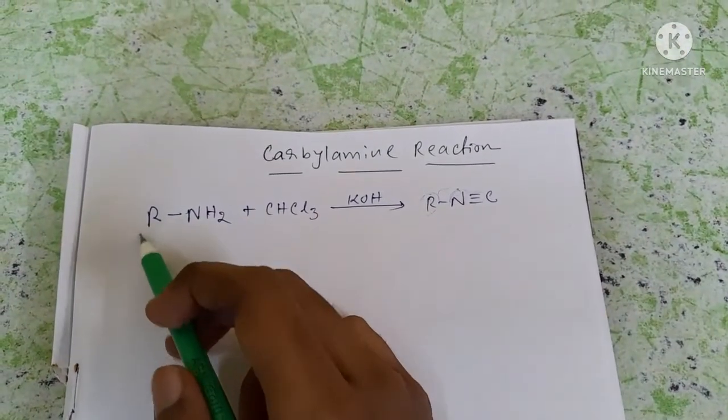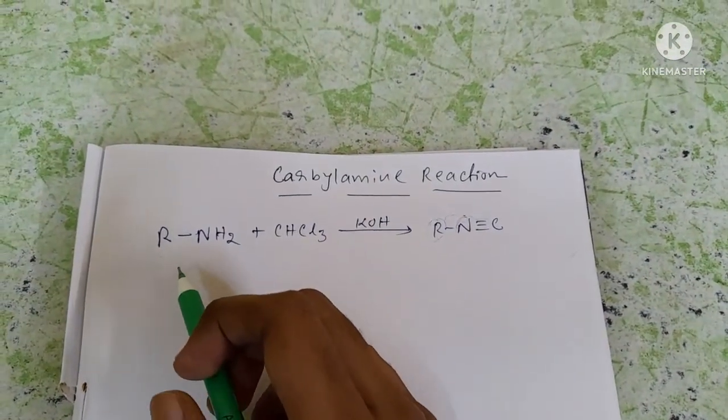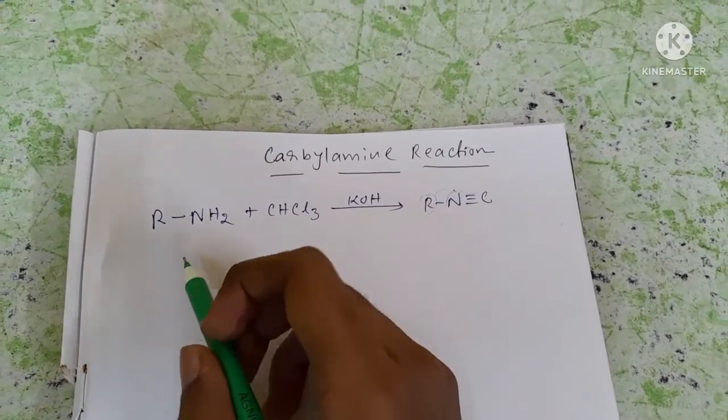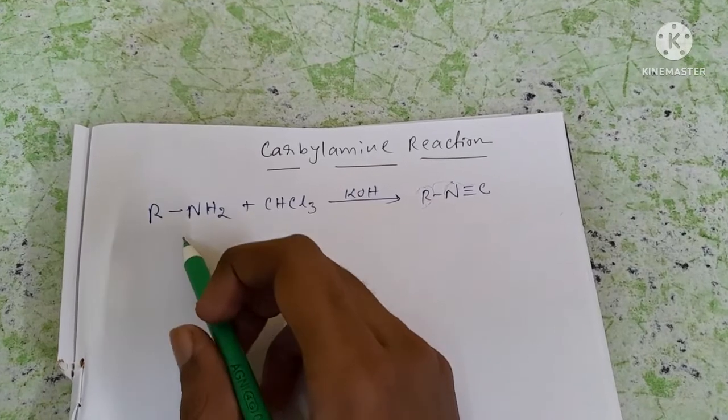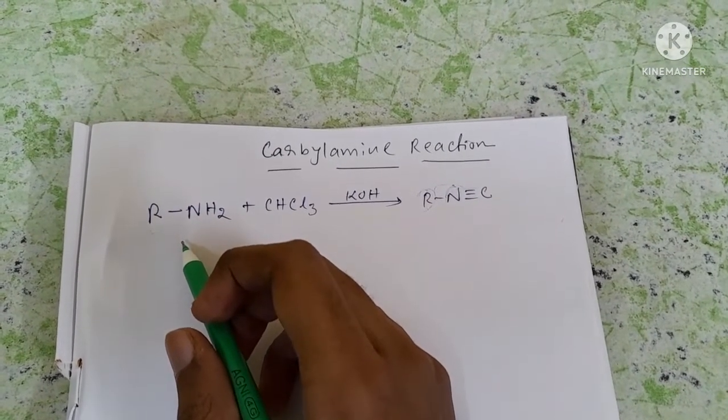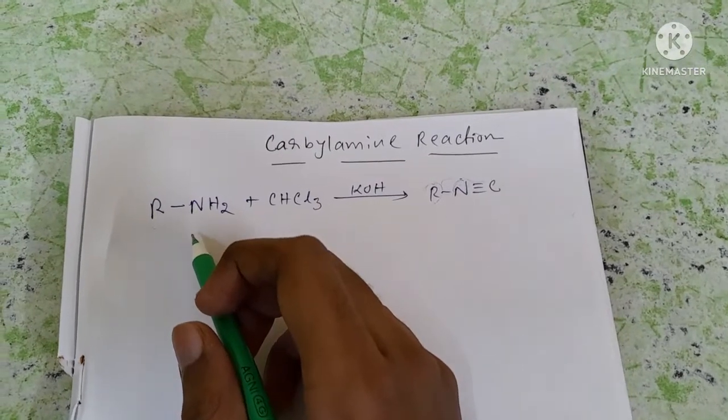Here, R must be an alkyl group like methyl, ethyl, or propyl, and it must be a primary amine. Only primary amine can take part in this reaction. Neither secondary nor tertiary amine can react and perform this reaction.